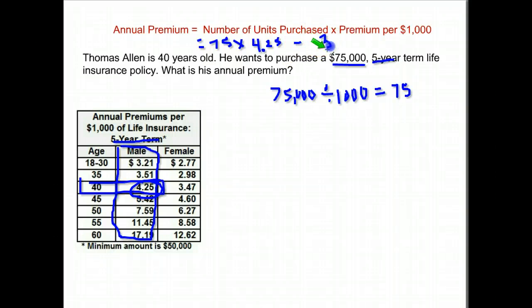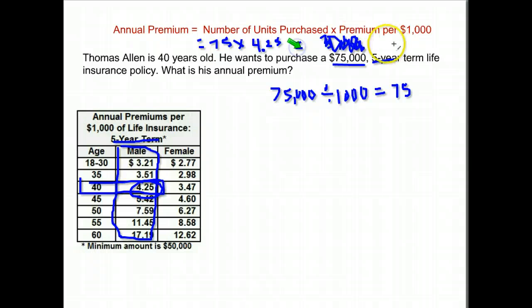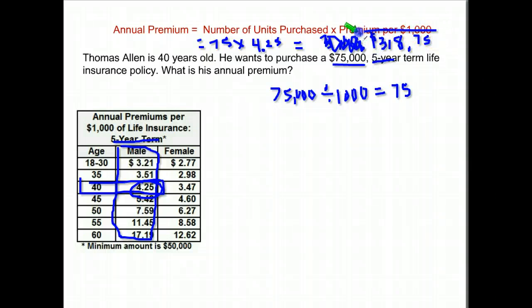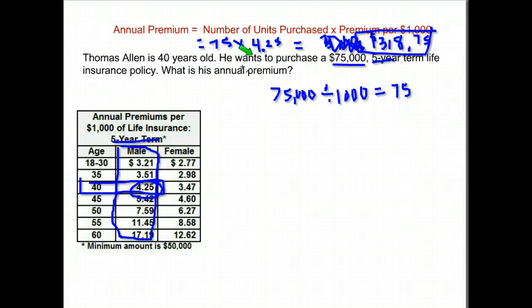When we calculate that we get — not three thousand, sorry, I misread my decimal point — three hundred and eighteen dollars and seventy-five cents. You'd hate to have that mistake made! So again, you find the rate from the chart, multiply it by the number of units you're purchasing, and that tells you your annual premium — how much you pay each year to have that life insurance.